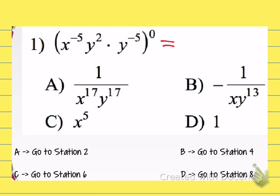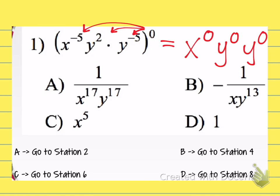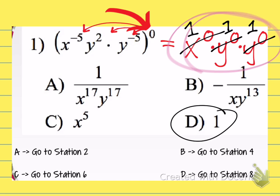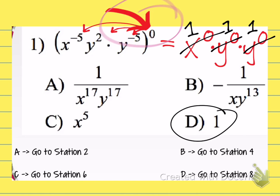So for question 1: this entire expression is surrounded by parentheses being raised to the power of 0. The power-to-power rule means you multiply all of the exponents together — negative 5 times 0 is 0, 2 times 0 is 0, and negative 5 on the y still gives you 0. Anything raised to the power of 0 becomes 1, and 1 times 1 times 1 is still 1. In fact, from the very beginning, because the entire expression was being raised to the power of 0, you could have concluded immediately that the answer is 1. Number 1 is D.